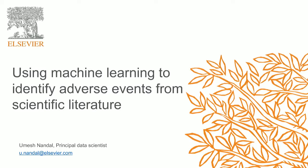Umesh is the principal machine learning and natural language processing scientist in the content transformation department at Elsevier. The content transformation department is focused on content production pipelines that enable Elsevier to turn content into answers. Specifically, they combine natural language processing and machine learning methods with domain expertise in order to enrich content into data structures that drive analytics.